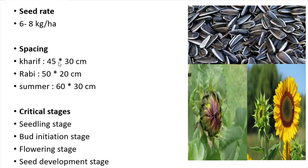The critical stages for both nutrient and irrigation management are: seedling stage, bud initiation stage which is also called the knee-high stage, buttoning stage, flowering stage, and seed development stage. These stages are critical for both nutrient and irrigation management.